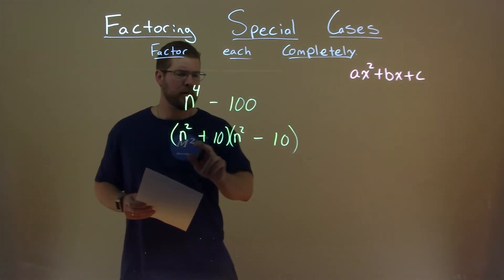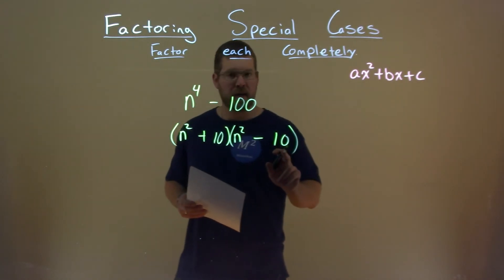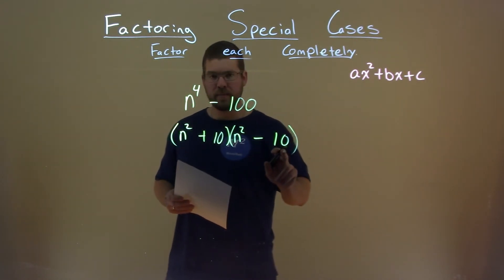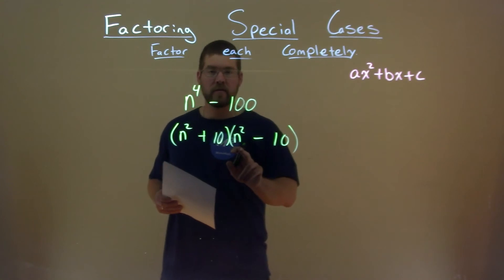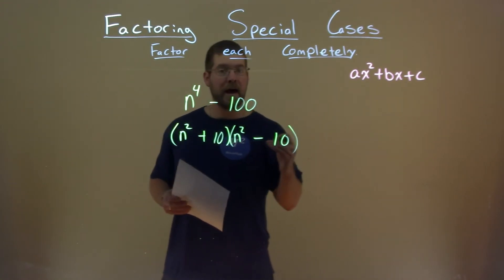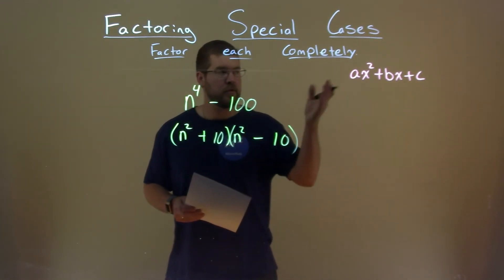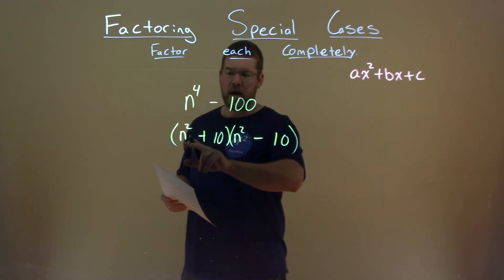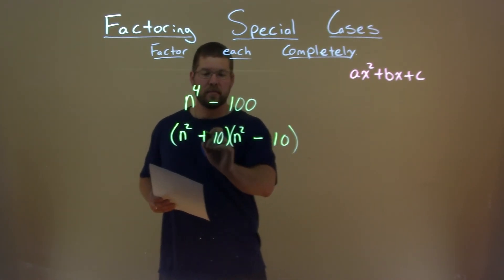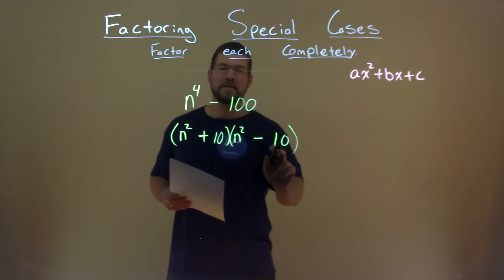But watch this. n squared times negative 10 gives me negative 10 n squared. 10 times n squared is a positive 10 n squared. Add them together, you get 0. No b value. So we have our final answer here. n squared plus 10 times n squared minus 10.